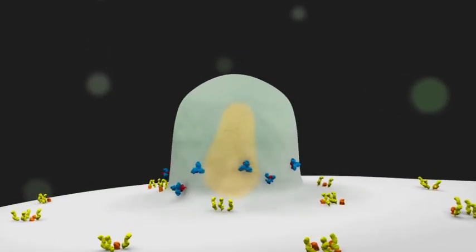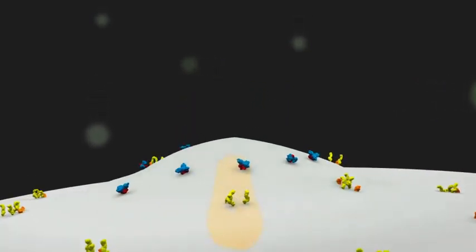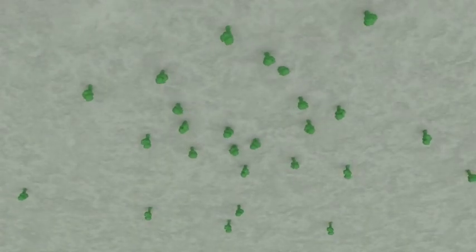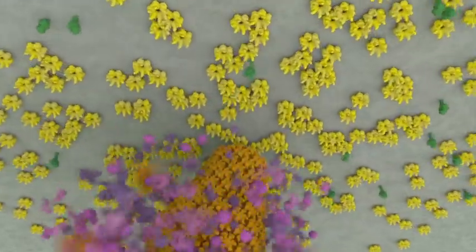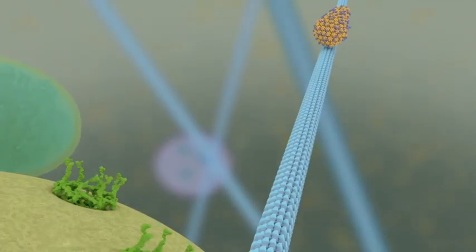This allows the viral capsid to enter the cell. Inside of the cell, the virus starts to move towards the nucleus, using microtubules as a sort of highway system.